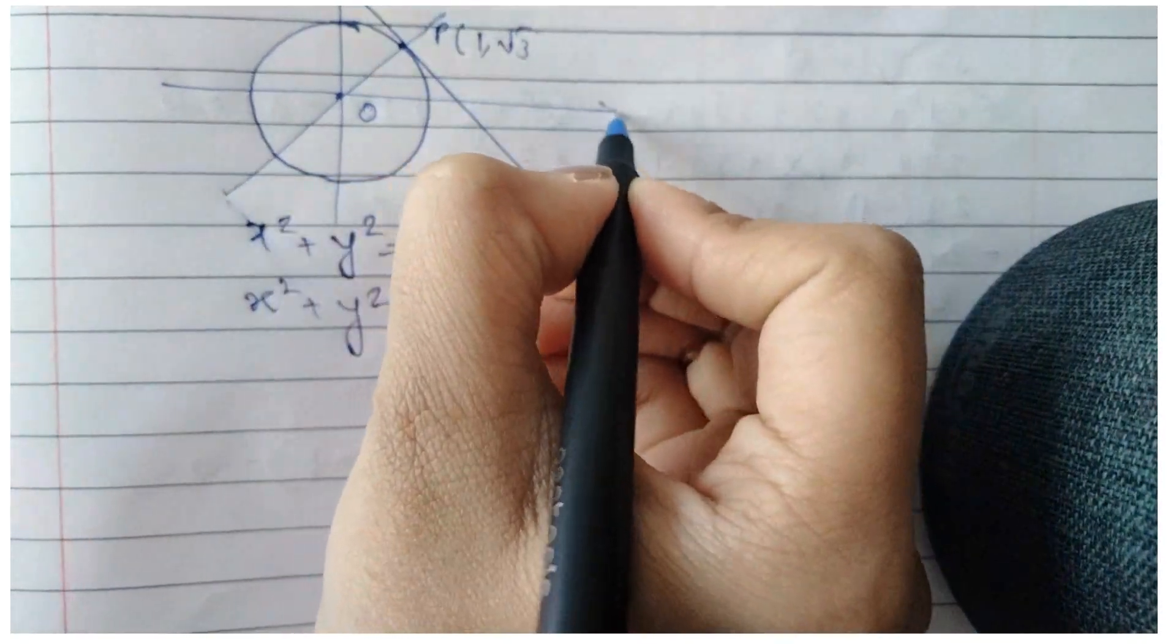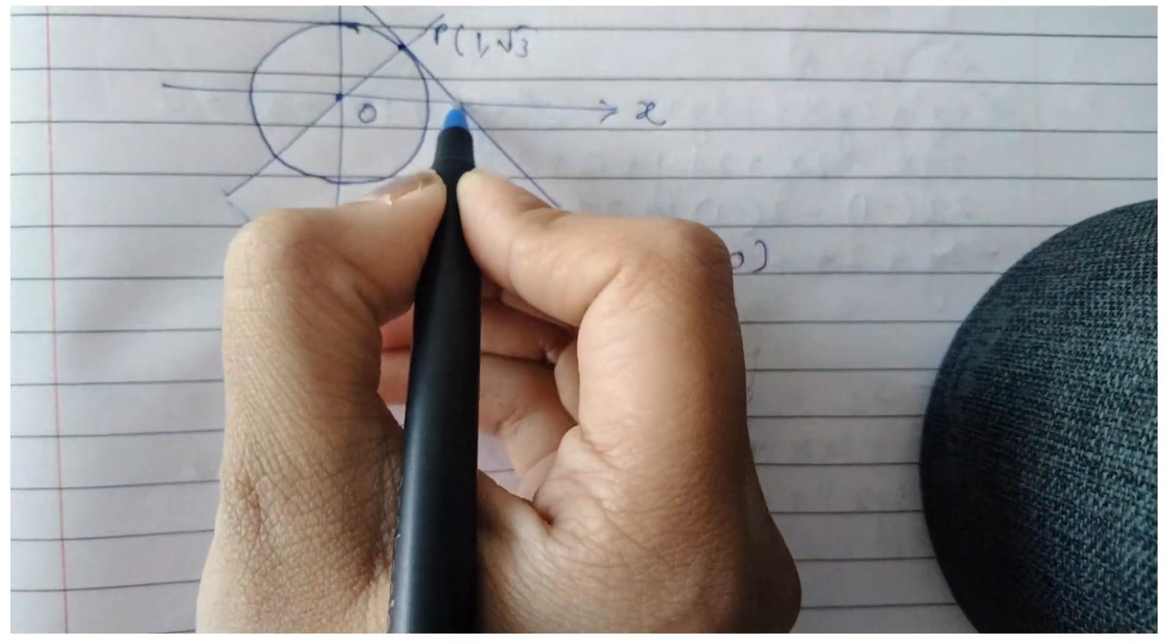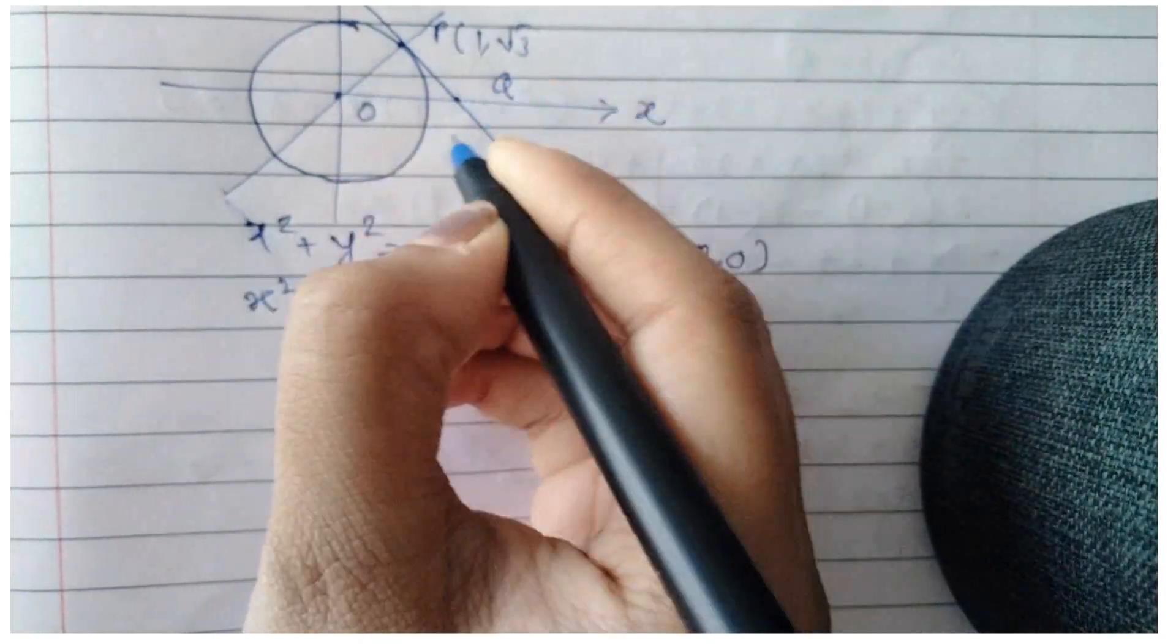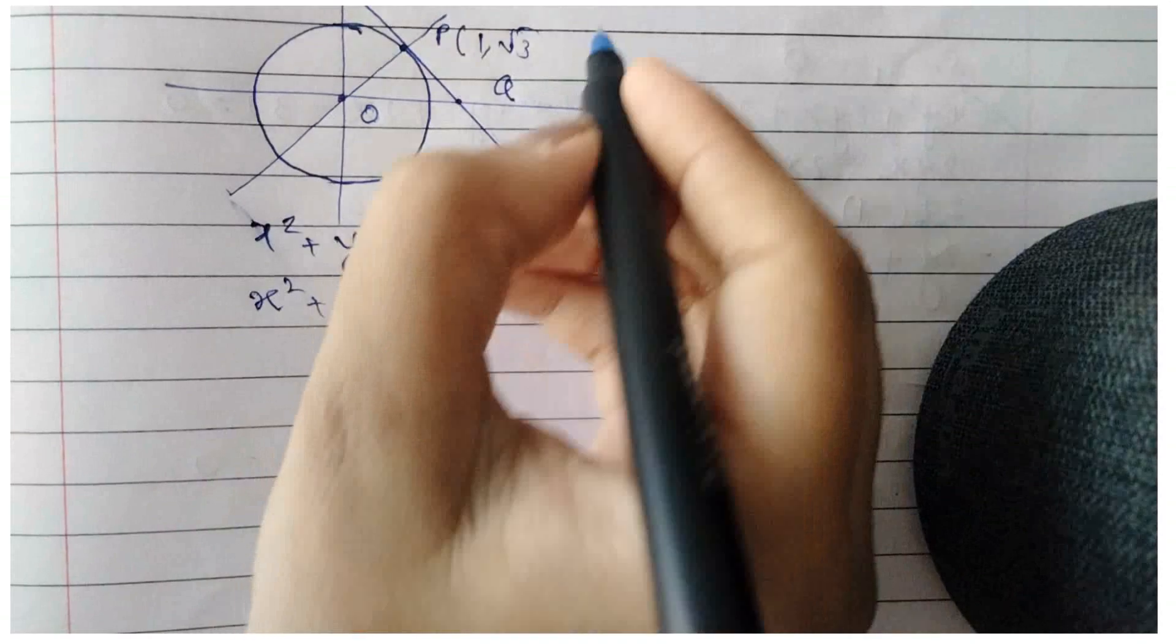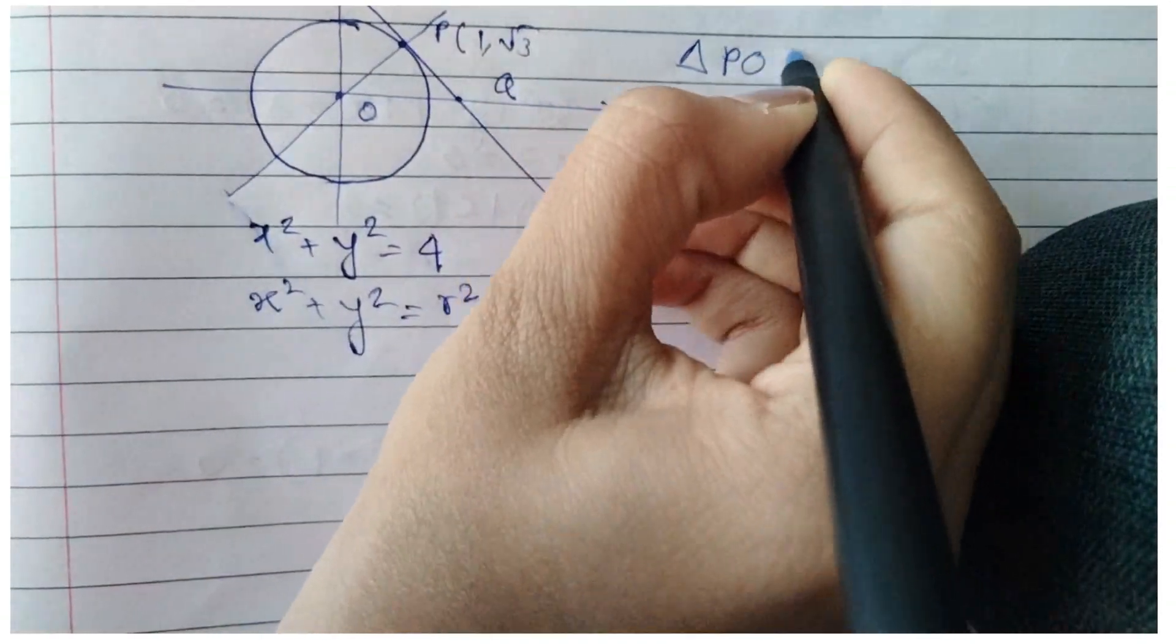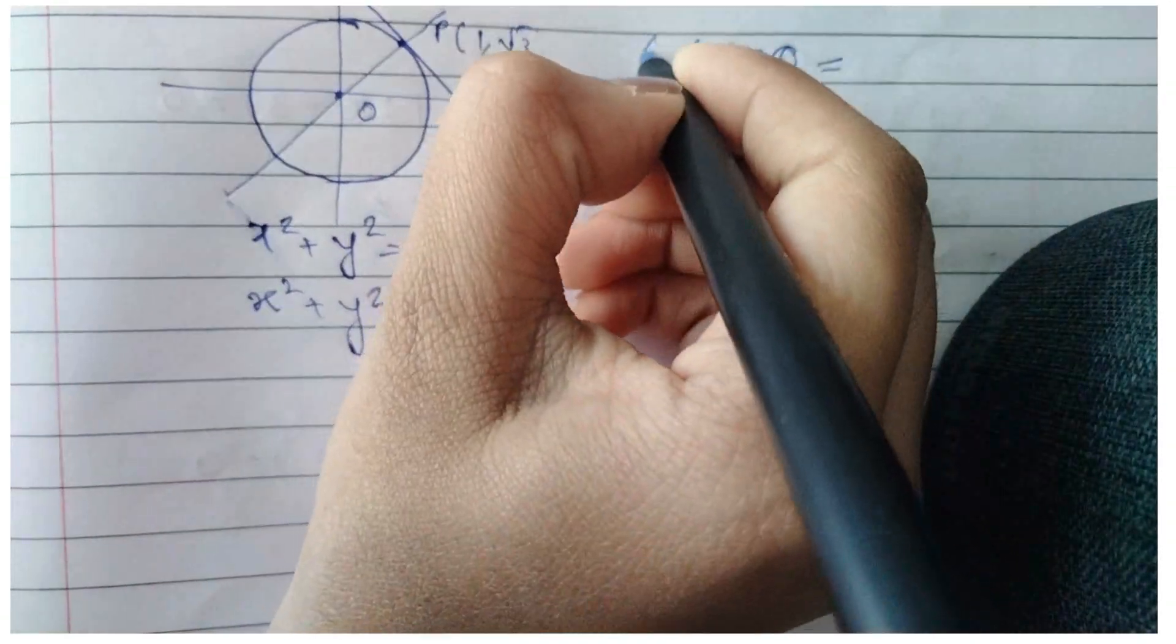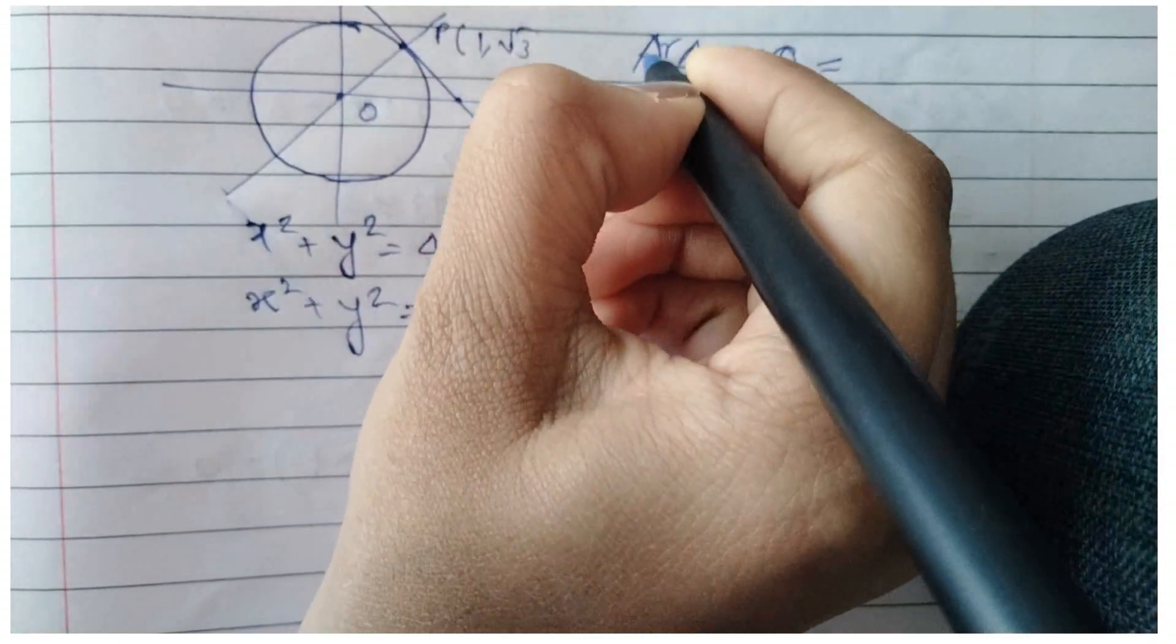We need to find point Q which lies on the x-axis. To find the area of triangle POQ as asked in the question.